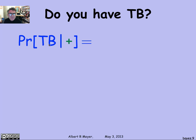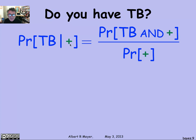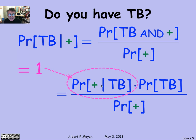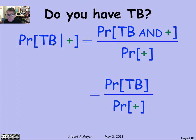Let's look at the definition of conditional probability. The probability that you have TB given that the test came in positive is simply the probability that both the test comes in positive and you have TB, divided by the probability that the test comes in positive. Using the definition of conditional probability again, this intersection — having TB and the test coming in positive — is simply the probability that the test comes in positive given that you have TB, times the probability that you have TB. That probability is 1, since the test is perfect when you have TB. So this simplifies to: the probability that you have TB given the test says you do equals the probability that you have TB divided by the probability that the test comes in positive.